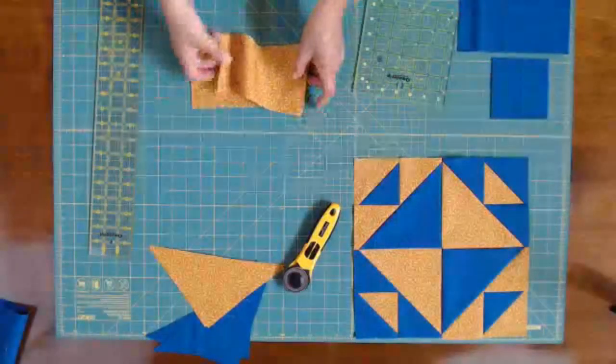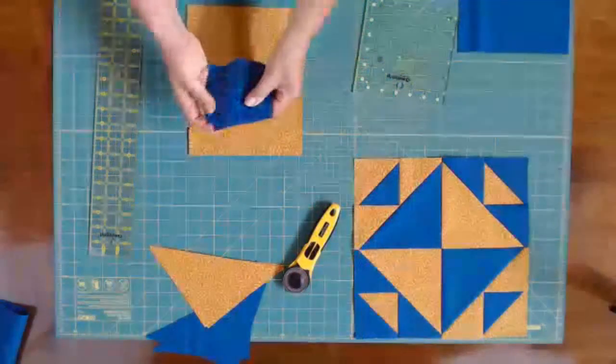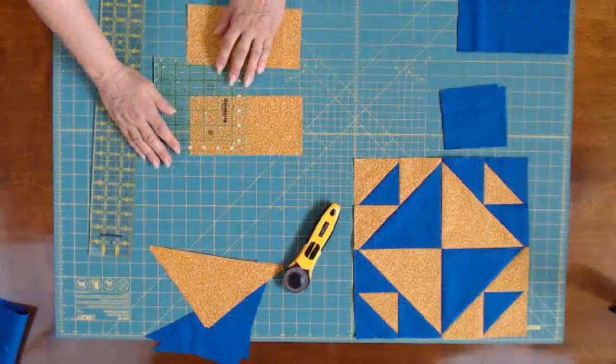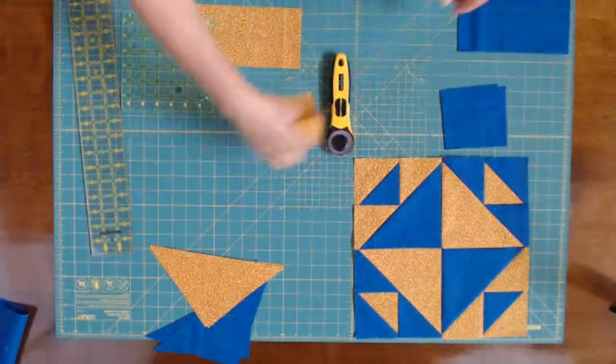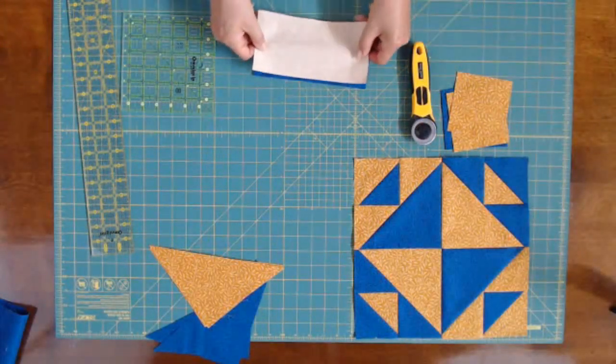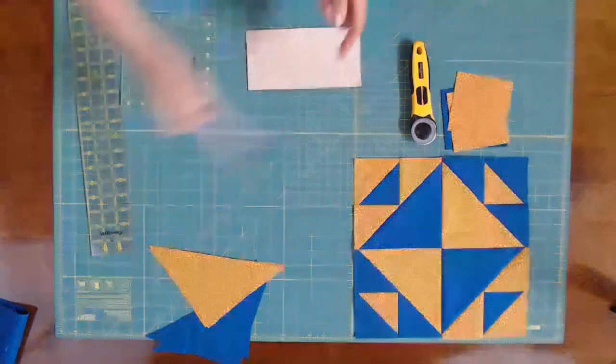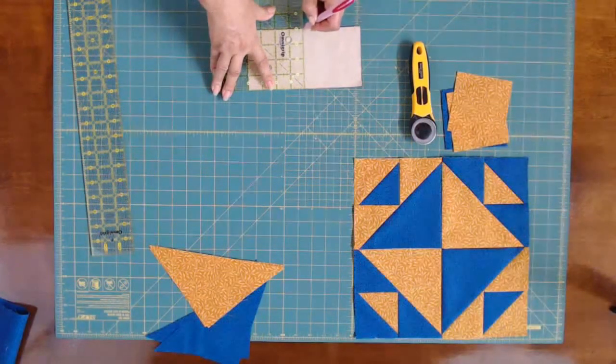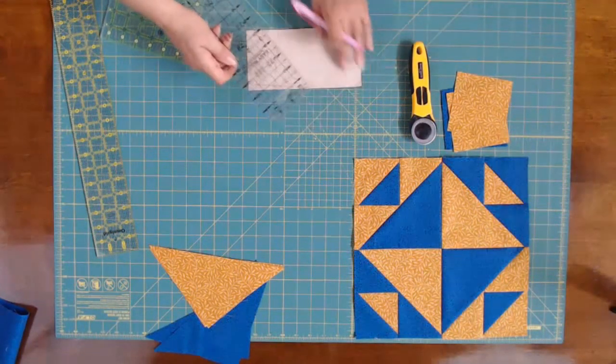All right, let's talk about the two four by eight inch rectangles. Now, one gets cut in half into two squares. So these are four by four squares. And those go there. Now, these two will get put together, right sides together or good sides together. And on the back here, I'm going to take my air erase pen and I'm going to mark the center. And then what I'm going to do is I'm going to draw my diagonals.